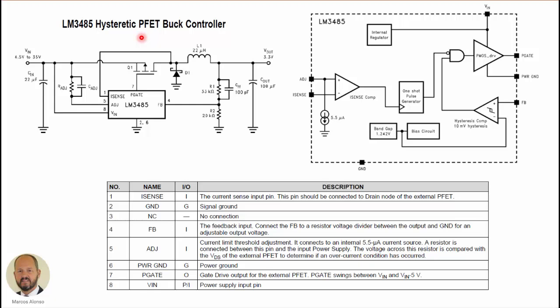Finally, here is an example of a commercially available hysteretic controller, the LM3485. It measures the output voltage using a voltage divider and generates the pulses for the switch. The internal schematic and pin information are shown here. With this we reach the end of this presentation. I hope you find this information useful — please let me know if you have any comments or questions. Thanks for watching, and I hope to see you in the next video.